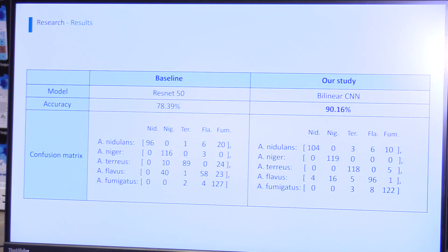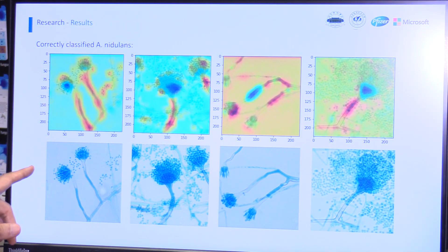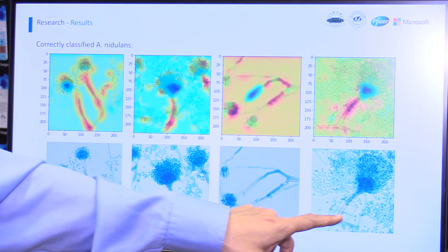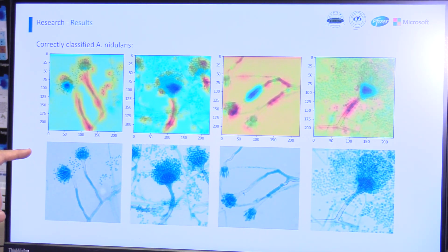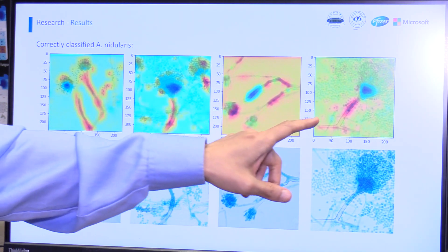We are trying to classify among five different classes of fungal infections. Here's the confusion matrix — you can see that we are enhancing the classification accuracy as we get more data over time. This is a typical image that may be uploaded to the system to generate the classification result.